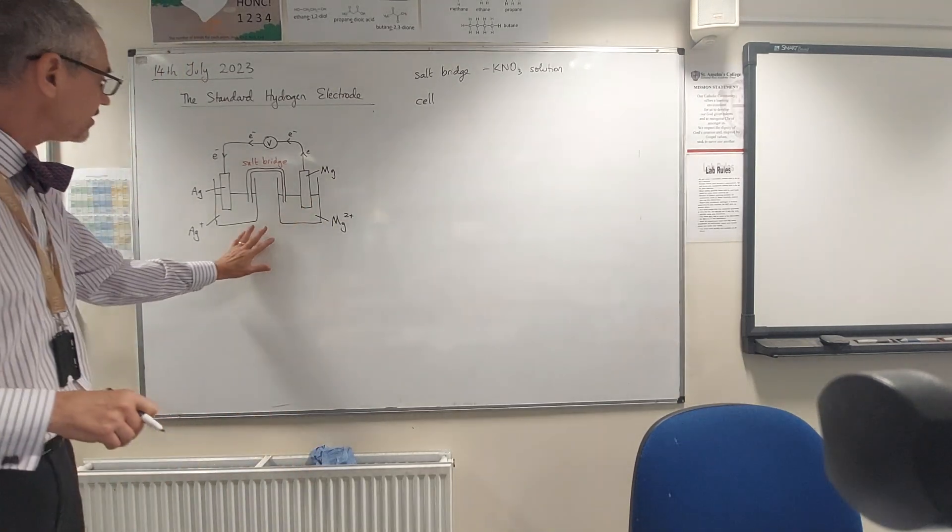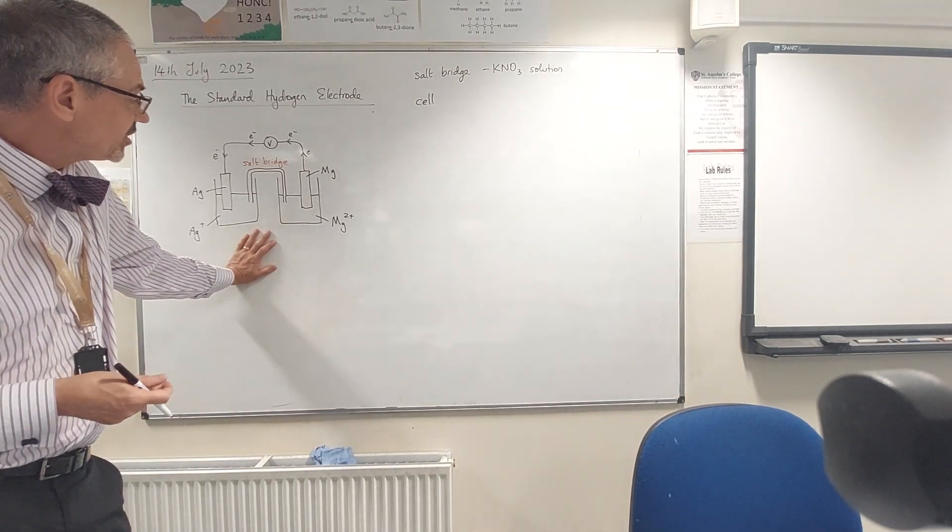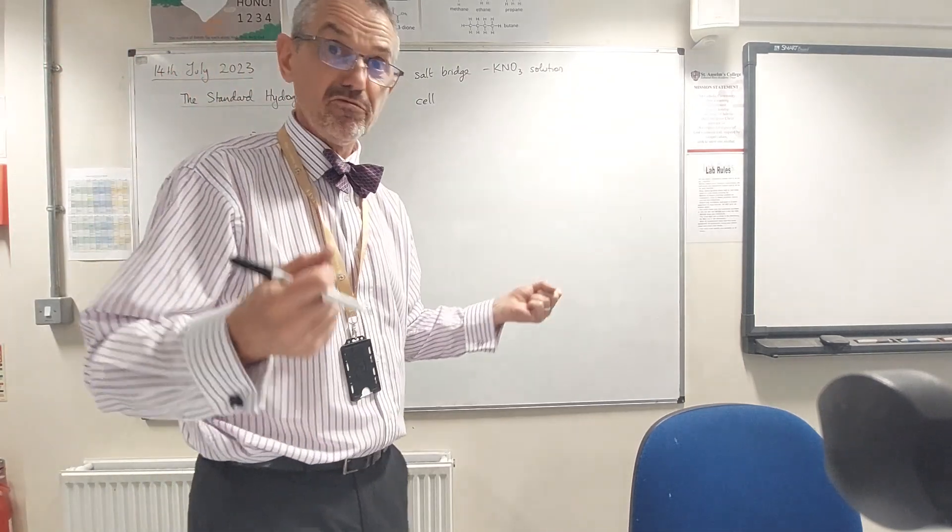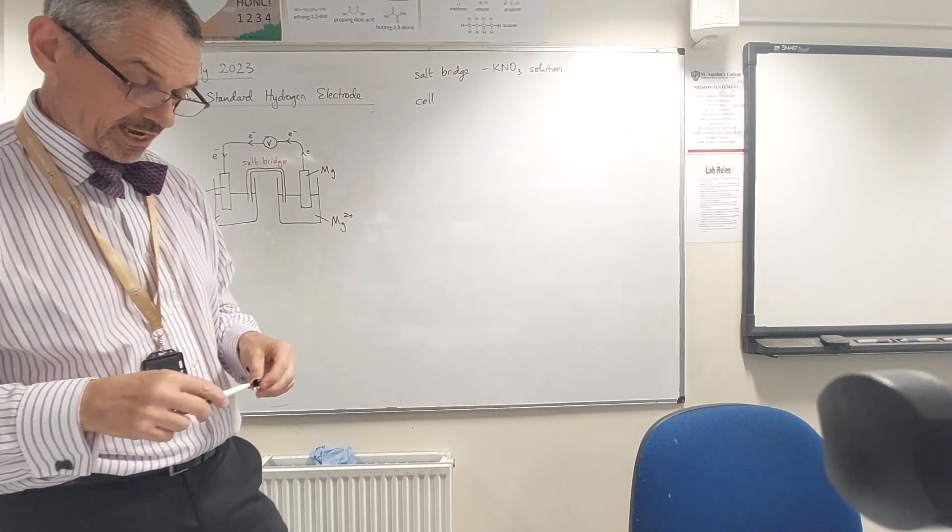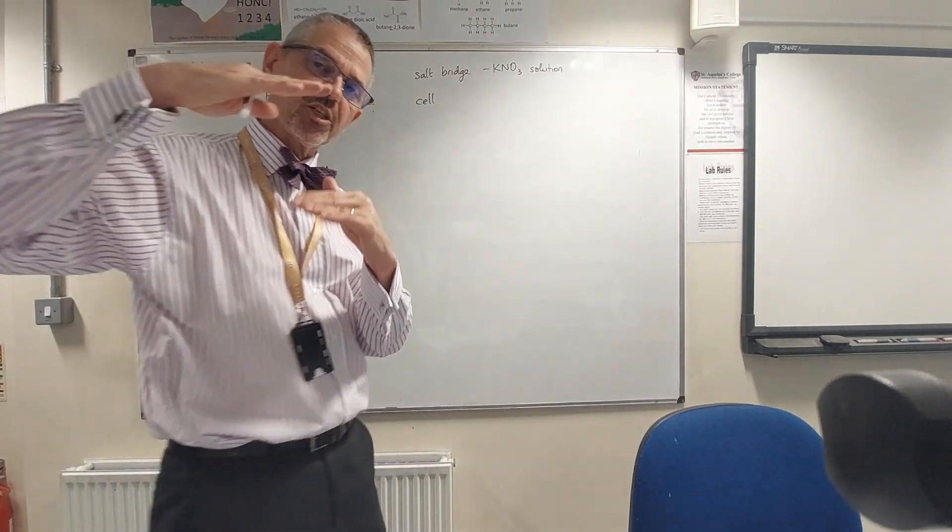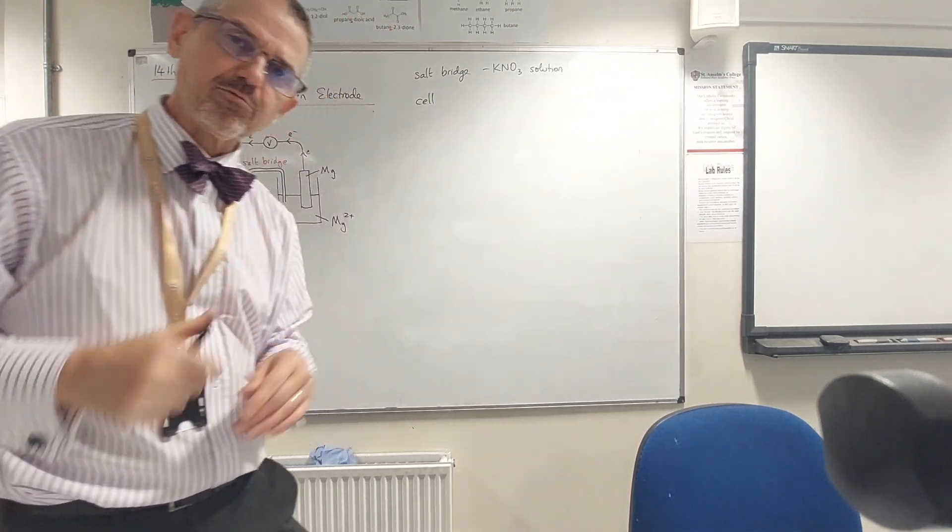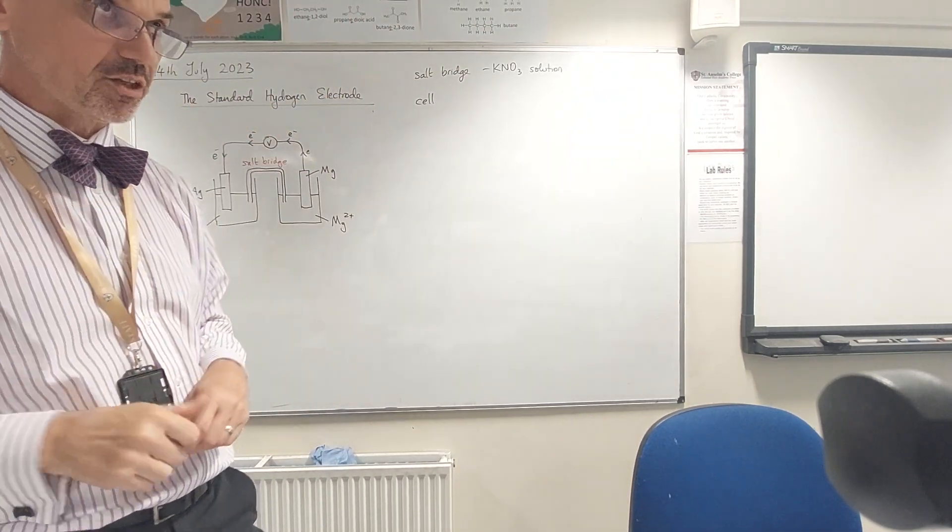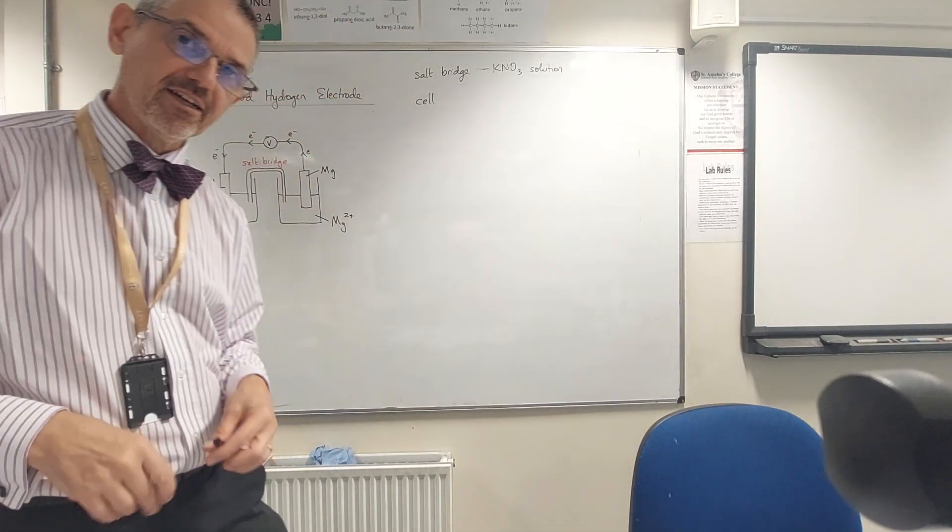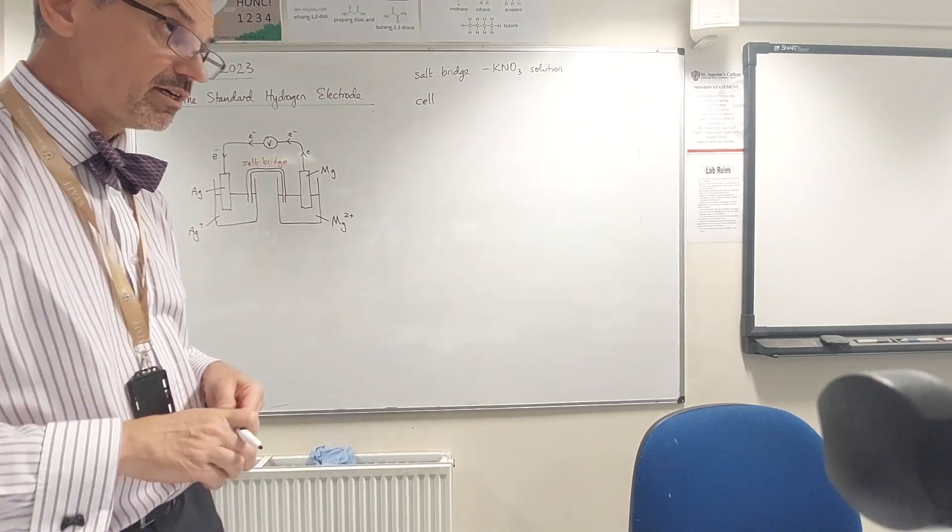That's our cell and we can have lots of different combinations of metals. The first cell created by Mr. Volta, no less, of Italian fame, was copper and zinc. He had layers of copper and zinc on top of each other separated with bits of damp tissue paper to act as his salt bridges. By having a whole bunch of layers he was able to create quite a sizable voltage from that.